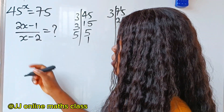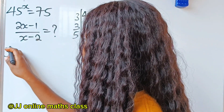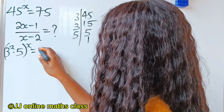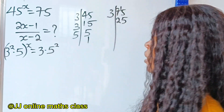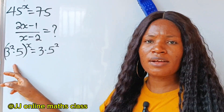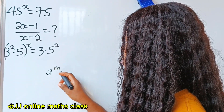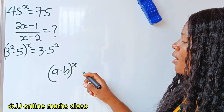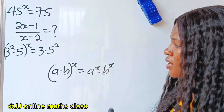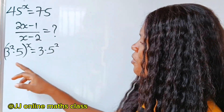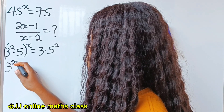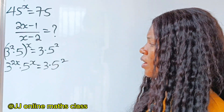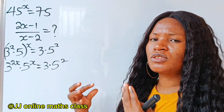So now I rewrite: 45^x becomes (3² × 5)^x = 75, which is 3 × 5². Opening the brackets using the rule (a × b)^x = a^x × b^x, the left-hand side becomes 3^(2x) × 5^x, and the right-hand side is 3 × 5².